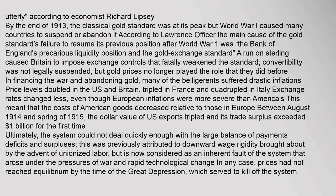A run on sterling caused Britain to impose exchange controls that fatally weakened the standard. Gold prices no longer played their former role; abandoning gold caused many belligerents to suffer drastic inflation — prices doubled in the US and Britain, tripled in France, and quadrupled in Italy. Between August 1914 and spring of 1915, the dollar value of US exports tripled and its trade surplus exceeded $1 billion for the first time. Ultimately, the system could not deal quickly enough with large balance of payments deficits and surpluses. Prices had not reached equilibrium by the time of the Great Depression, which served to kill off the system completely.